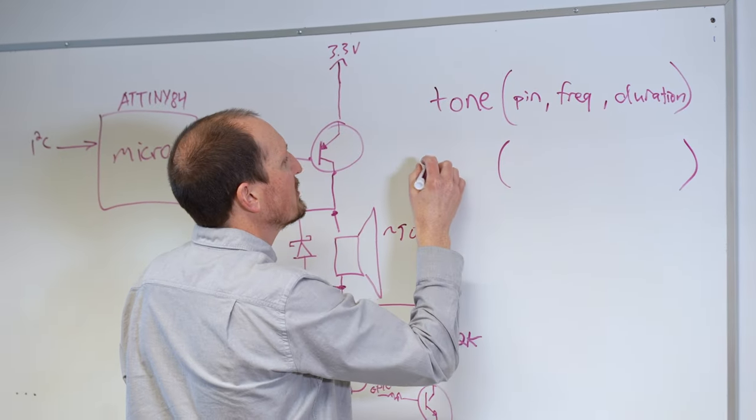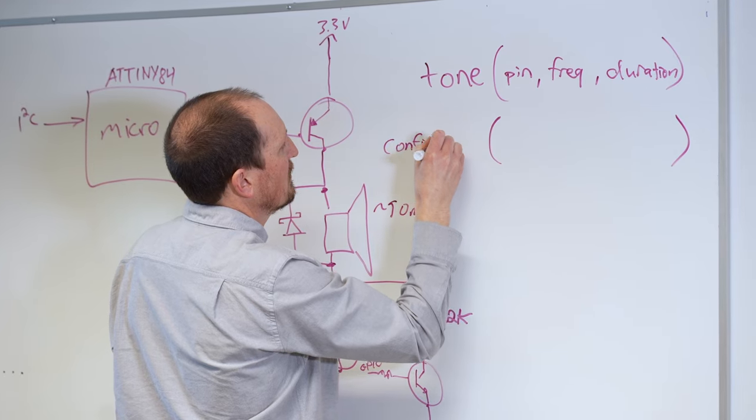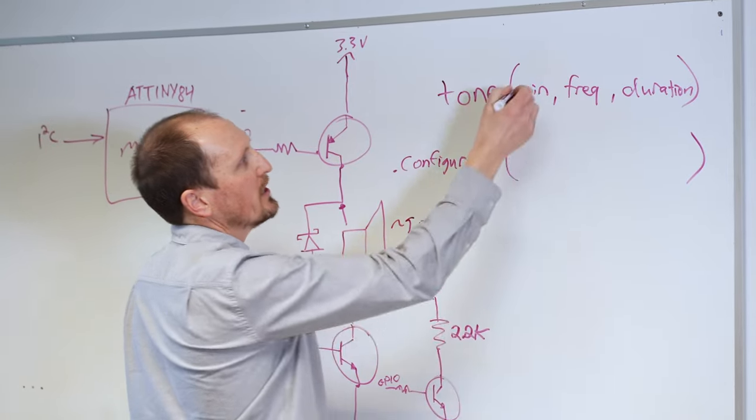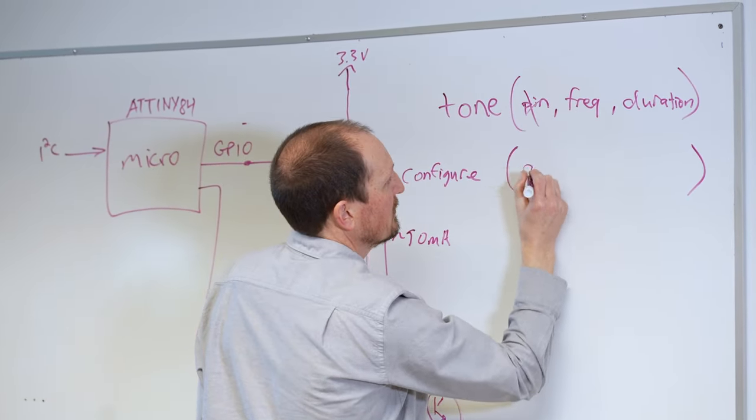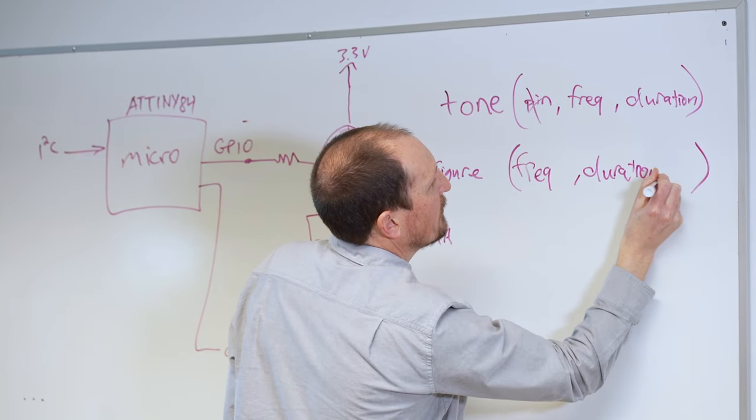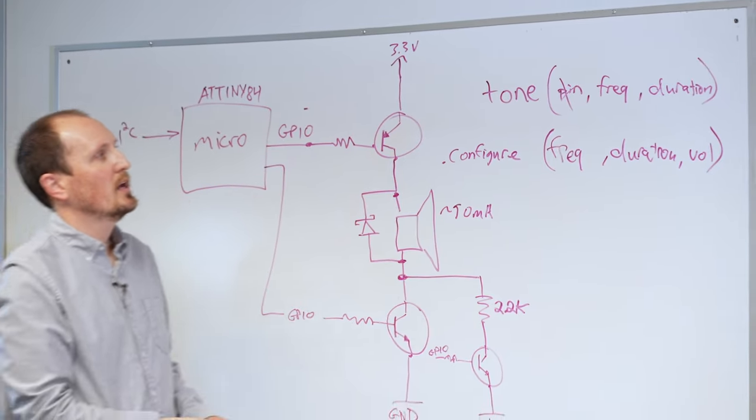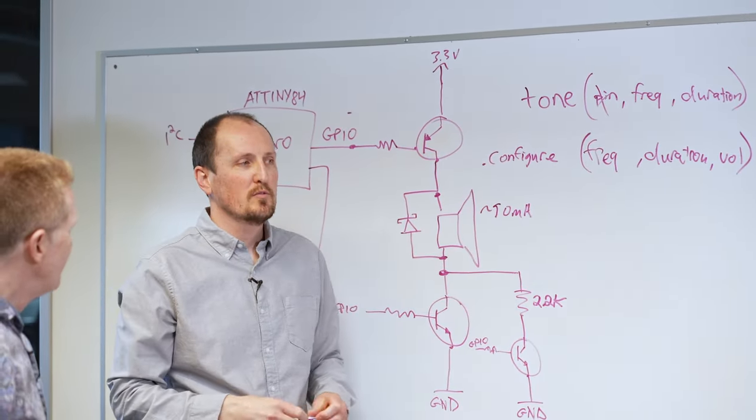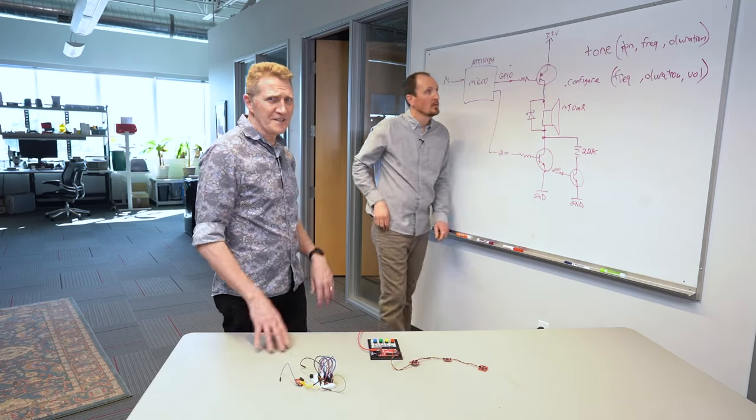Right. But essentially, it's a lot like tone. So it's going to be whatever your instance is, dot configure. And we don't need a pin, right? Right. But we do have frequency and duration. And then we also have volume. Right. The option of volume at the end. Yeah. So I just kind of wanted to highlight how similar this is to what you might be used to in terms of playing with buzzers in the Arduino library. Absolutely. It was really an easy transition.